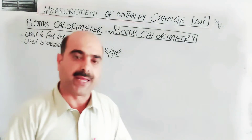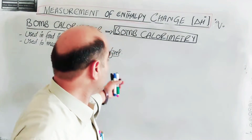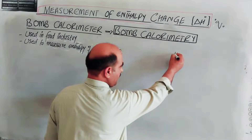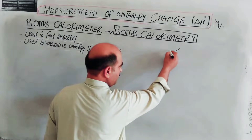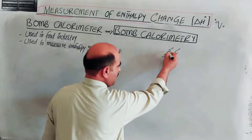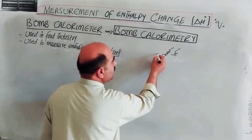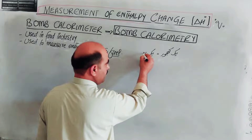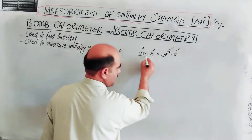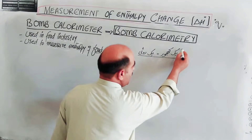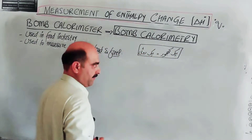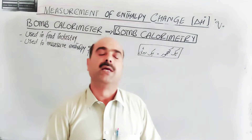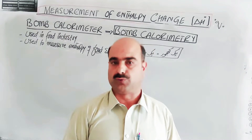For example, consider one date (kajur) — one date contains the same energy as one wheat roti (bread). Dates are an instant source of energy. When food is burned in the bomb calorimeter, we can determine its energy content.